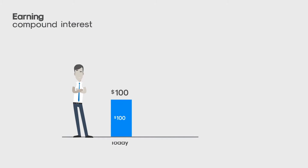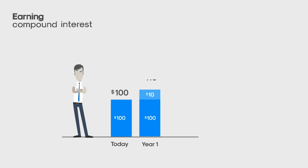For example, let's imagine you have $100 today and you decide to put it in the bank where it earns 10% interest in one year. After one year, you still have your original $100 but you also have 10% in interest, which works out to be $10. So in total, you have $110 after one year.